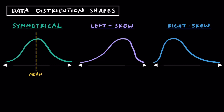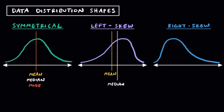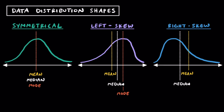What makes symmetrical data special is that all three measures of center are right in the middle. When we look at left skewed data, the mean is actually a little bit to the left — not in the center, which is why we call it left skewed. The median is a little bit more towards the right, towards the top of the curve, and the mode you can expect to find at the top of the curve as well. For right skewed data, we find the mean to the right of the top of the curve, the median is a little more to the left closer to the curve, and the mode is typically at the top of the curve. To remember which is which: symmetrical has the mean in the middle, left skewed has the mean to the left of the top of the curve, and right skewed has the mean to the right of the top of the curve.